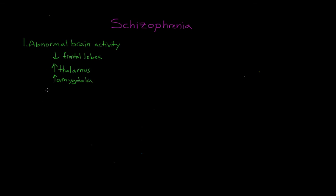Other studies of abnormal brain activity in schizophrenia talk about what's called the dopamine hypothesis. These theories talk about the increase of a specific receptor, the D4 receptor. It seems that this particular receptor for dopamine might be hypersensitive in individuals with schizophrenia, and it's believed that this might be related to symptoms involving hallucinations.